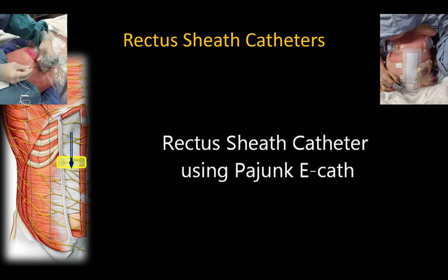Pain from midline laparotomy incisions usually outlasts the effect of single injection blocks, so inserting rectus sheath catheters is ideal — this can be easily done at the end of surgery. Either catheter-over-needle or catheter-through-needle sets can be used.